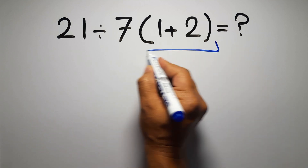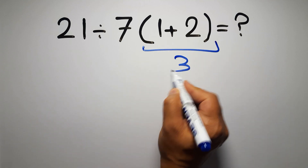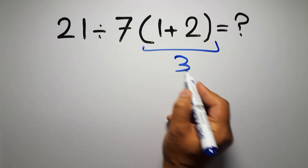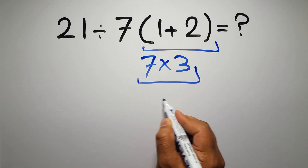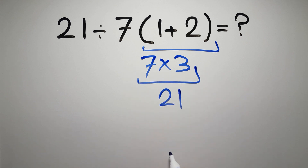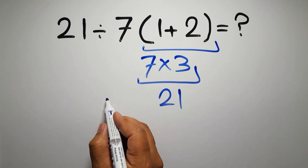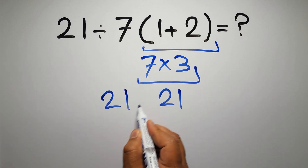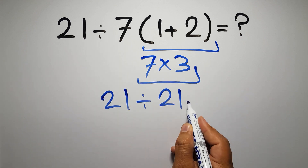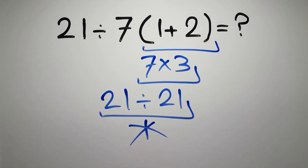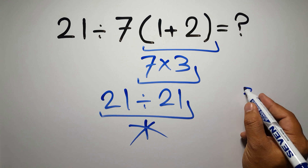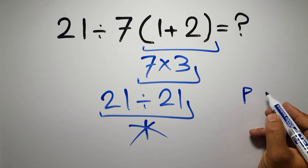1 plus 2 gives us 3, and 7 times 3 equals 21, so 21 divided by 21 is just 1. But this answer is not correct, because according to the order of operations, first we have to do parentheses, then...